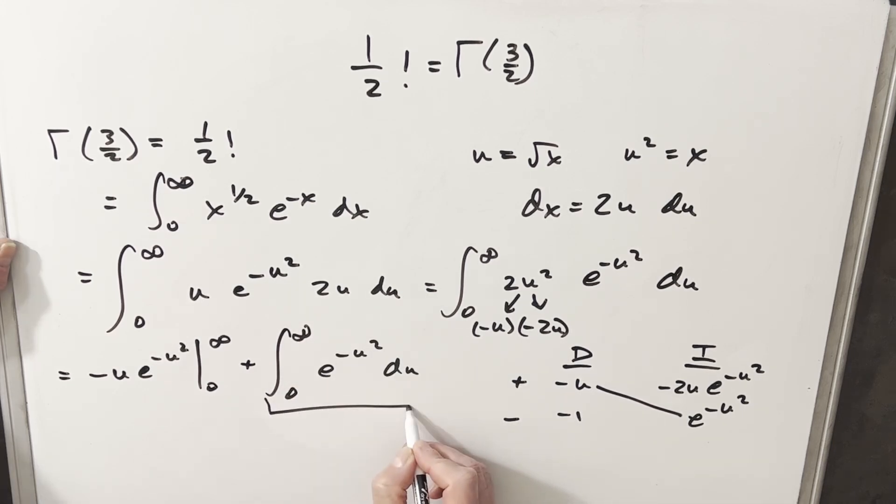But this piece here, this is just the Gaussian integral. And I've done a few other videos. I can provide a link. So we'll just use this known value for the Gaussian integral of square root of pi over 2.